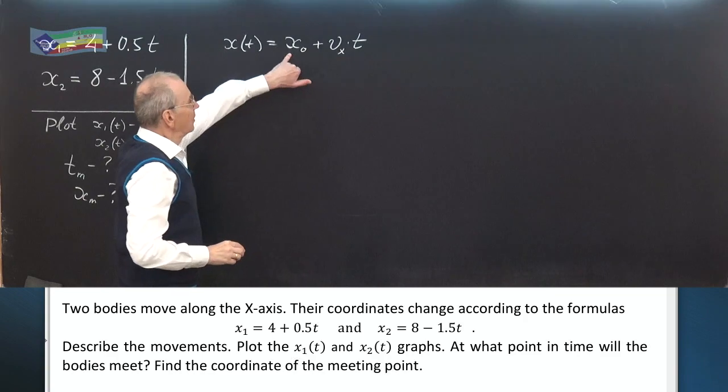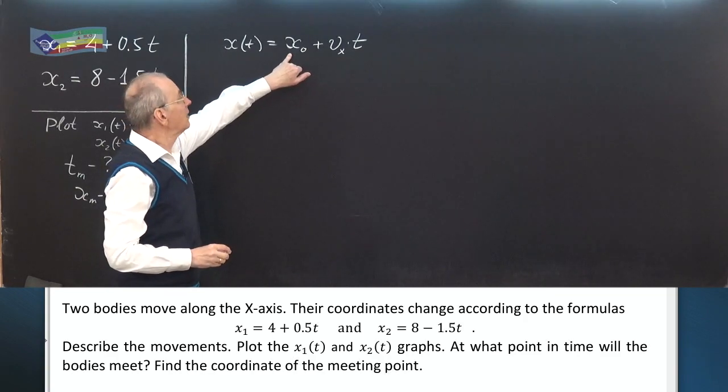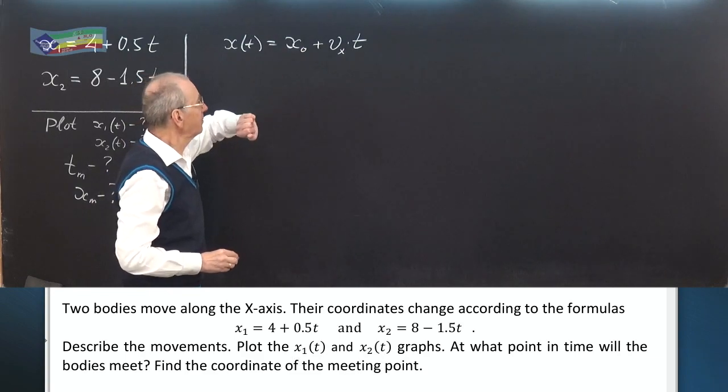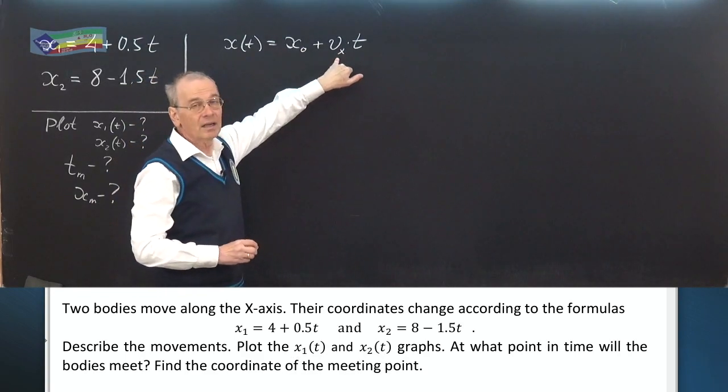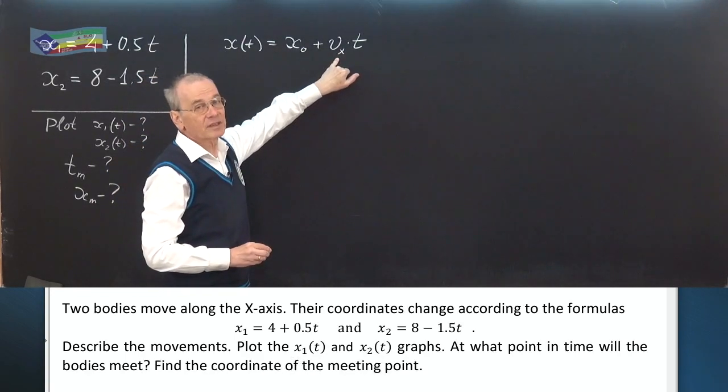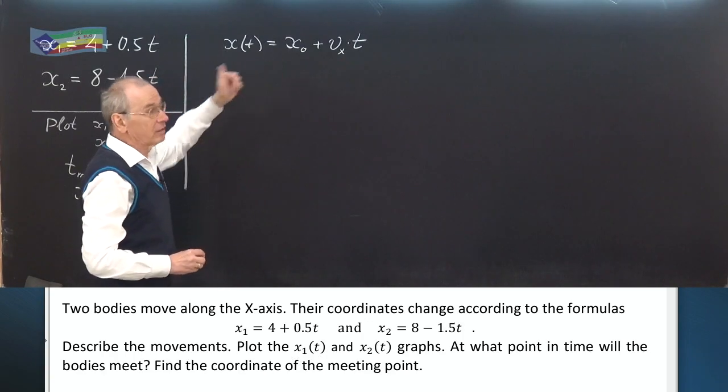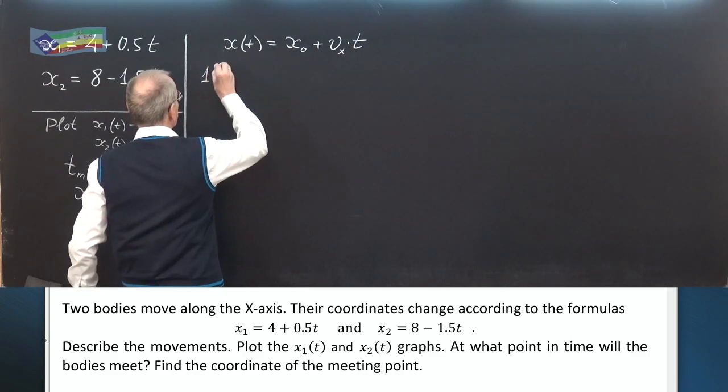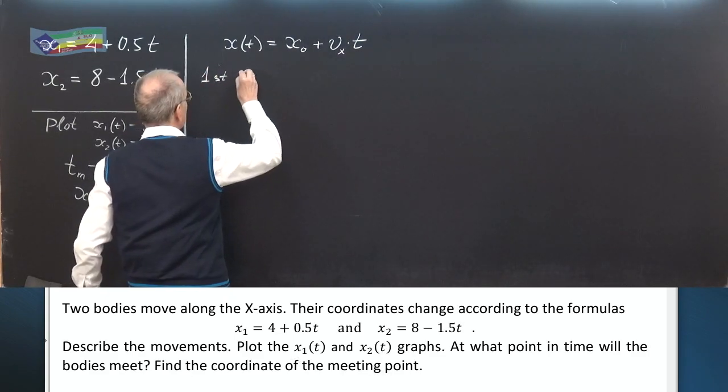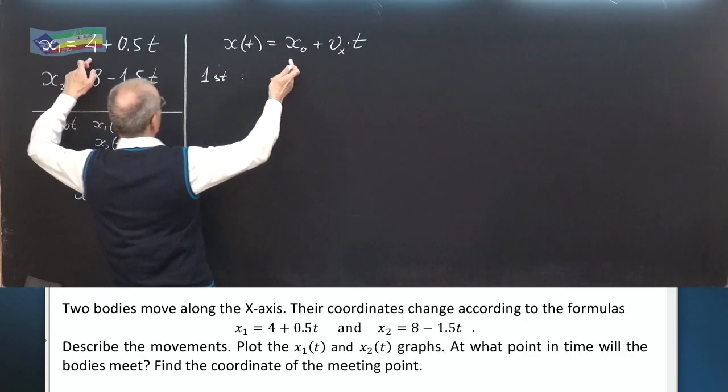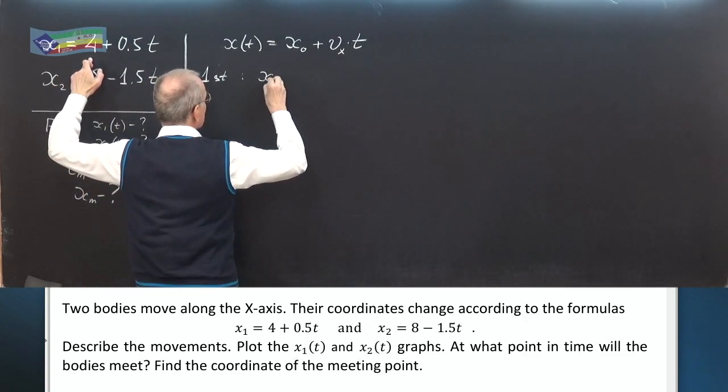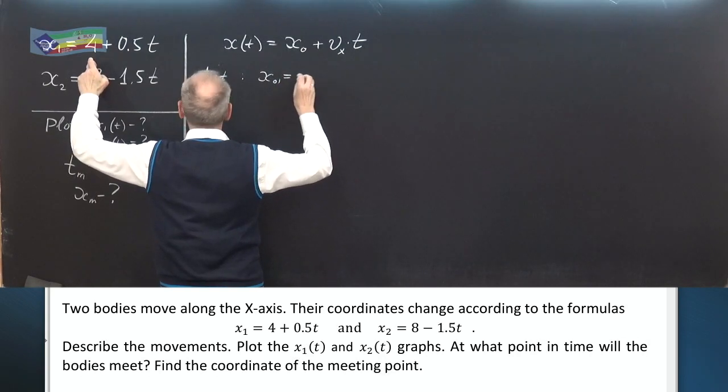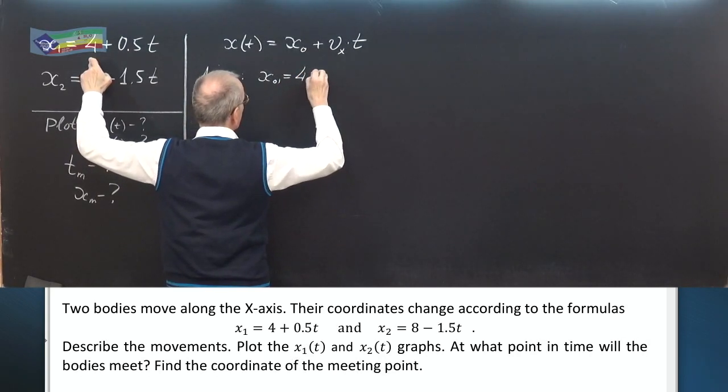x₀ is the initial position, initial coordinate of a body. vₓ is a component of the speed of the velocity of the body. First body, compare.